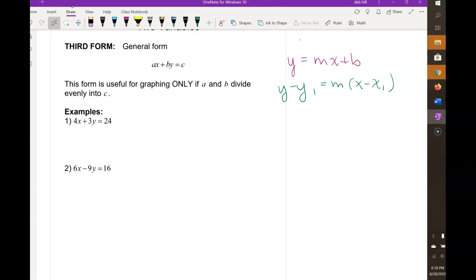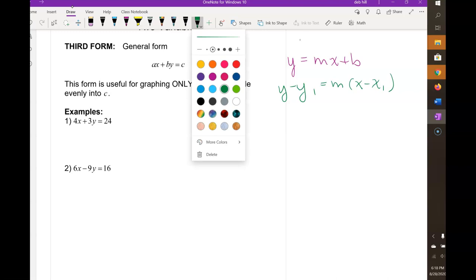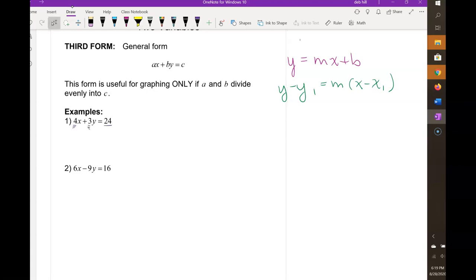There's a third form called the general form, and it looks like ax plus by equals c. This form is really useful for graphing, but only if a and b both divide evenly into c. In this first example we have a is 4, b is 3, and c is 24, so a and b both divide evenly into c, which means we can use the intercept method for graphing.